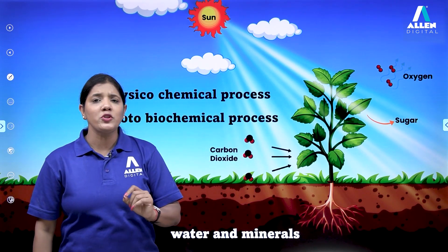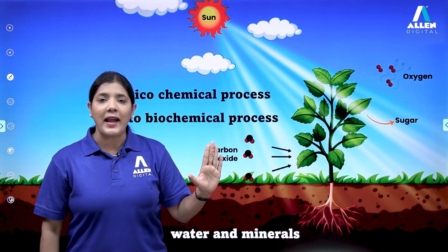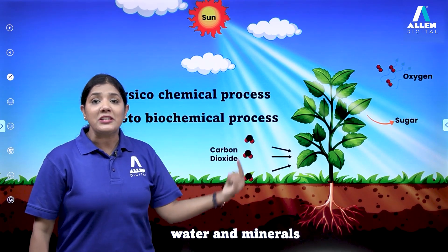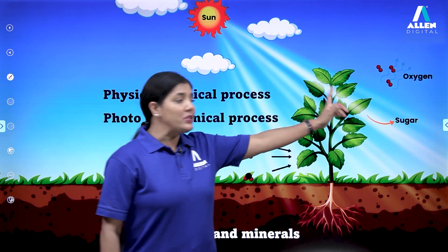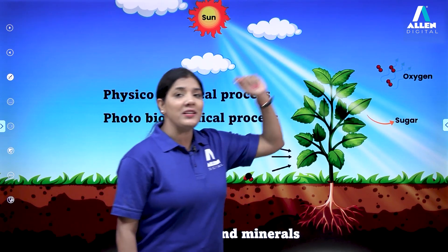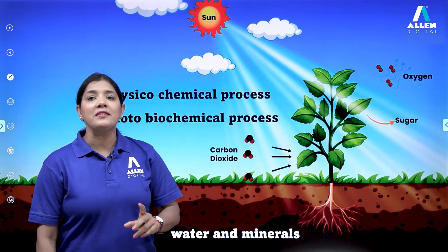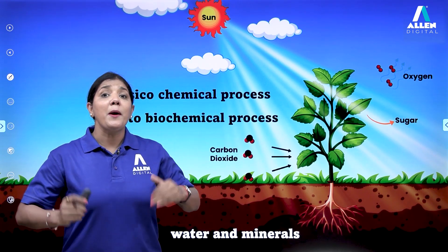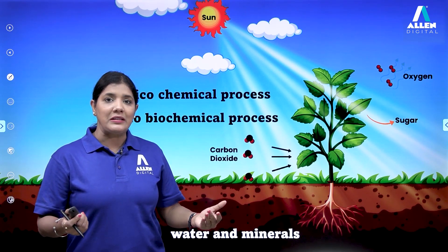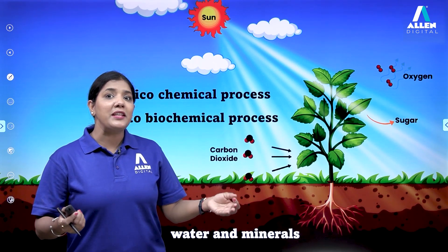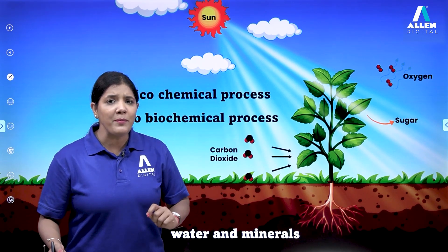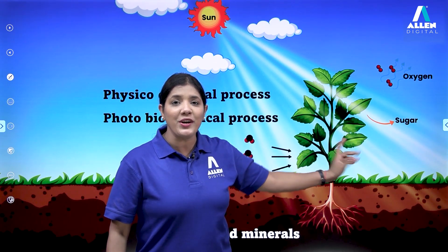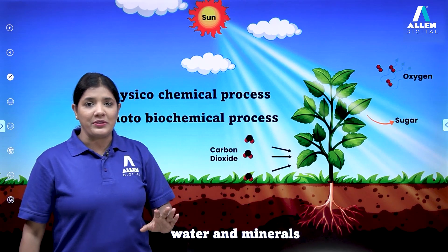The sugar produced is a simple organic sugar — glucose. In this entire process, oxygen is released as a byproduct. Oxygen is not the main product of photosynthesis; the main product is glucose.